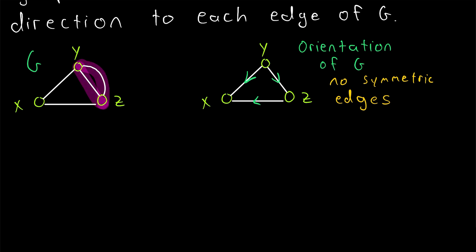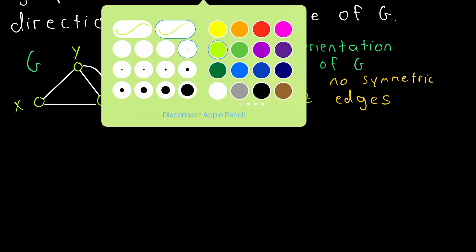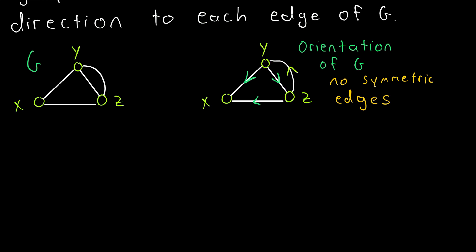For example, two edges joining Y and Z. Then we could assign one direction to one of those edges joining Y to Z and assign the opposite direction to the other edge. And then we would have a pair of symmetric edges. But again, as long as we're only dealing with simple undirected graphs, any orientations will have no symmetric edges.